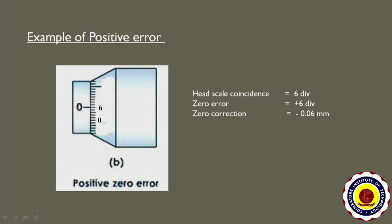Now let us see an example of a positive zero error. In this diagram, the zero of the pitch scale coincides with 6 divisions of the head scale. So the head scale coincidence equals 6 divisions, zero error equals +6 divisions, and hence the zero correction equals minus 0.06 mm.